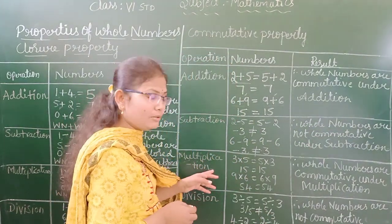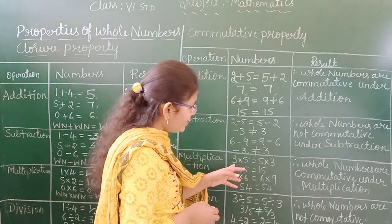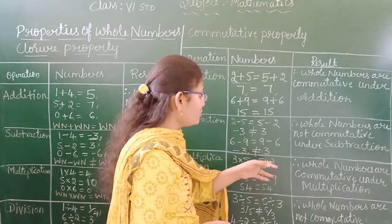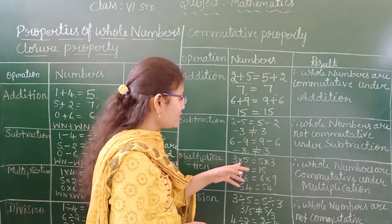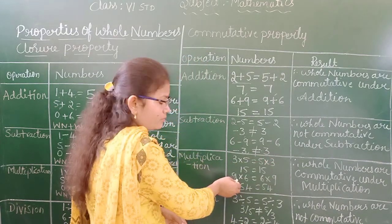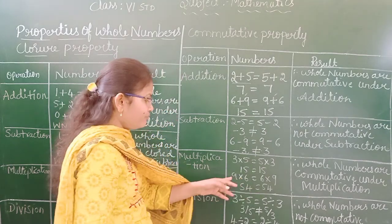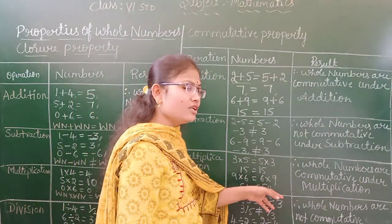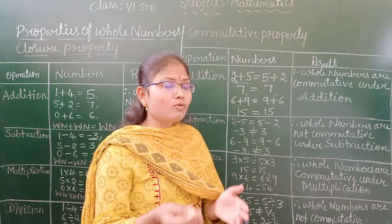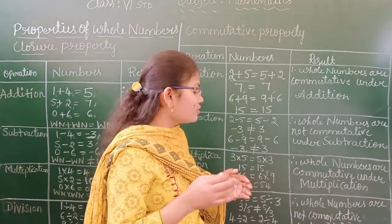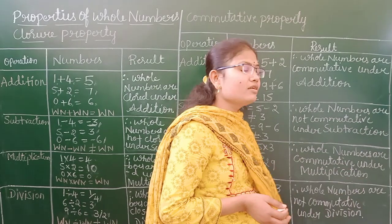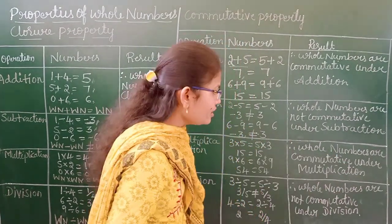Moving on to multiplication. Here I have taken 3 and 5. 3 times 5 equals 15, and 5 times 3 equals 15. Another example: 9 times 6 equals 54, and 6 times 9 equals 54. We get equal results in both cases. If you multiply whole numbers in any order, the result is equal, so whole numbers are commutative under multiplication.